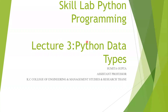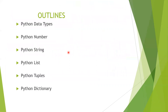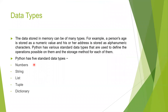Hello everyone, this is Sumitra Gupta, welcome you all for my third lecture of Python. Today we will learn Python data types. Basically there are five data types: Python number, Python string, Python list, Python tuples, and Python dictionary.